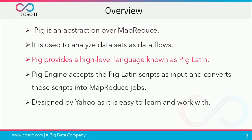Pig includes a high-level language called Pig Latin for expressing these data flows. The Pig Engine accepts these Pig Latin scripts as input and converts those scripts into MapReduce jobs, so Pig uses MapReduce to execute all of its data processing. It compiles the Pig Latin scripts into a series of one or more MapReduce jobs that it then executes.